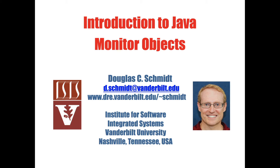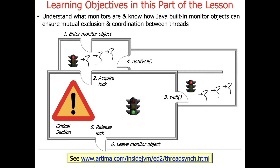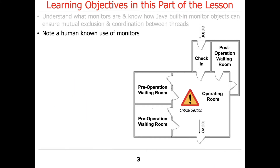We're going to give an introduction to Java Monitor Objects and talk about what monitors are. Monitors are a concept that have been around for a long time. We'll explain how Java's support for built-in monitor objects can be used to ensure mutual exclusion and coordination between threads. I'll also show you a very cool visualization model which demonstrates visually how things work with monitor objects in Java, and give a somewhat contrived example of human-known uses of monitors.